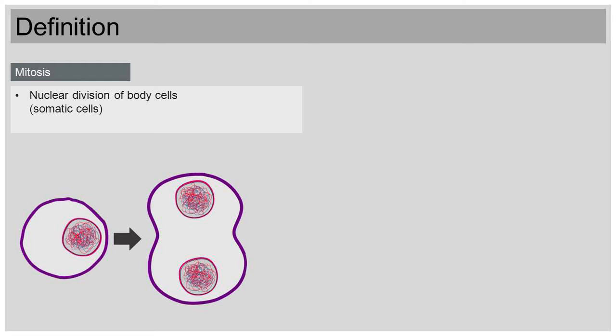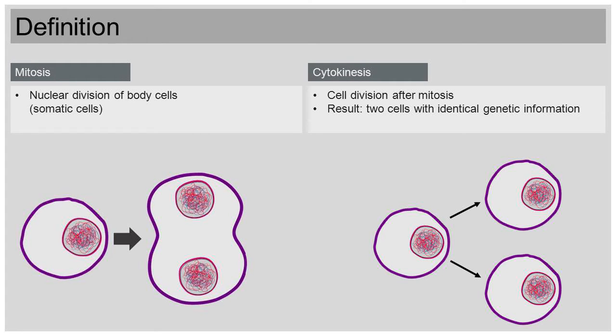I thought mitosis was the division of a cell. No. Many people think that, however, the term mitosis is restricted to the division of the cell's nucleus. If the cell divides after the division of its nucleus, this process is called cytokinesis. That's why many people get confused if they find out that mitosis only describes the nuclear division.